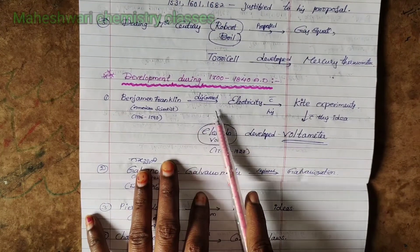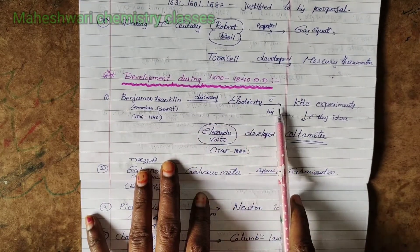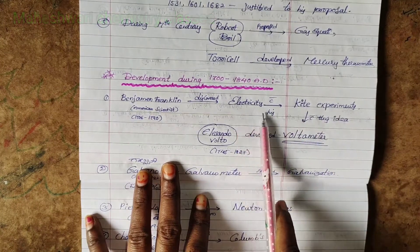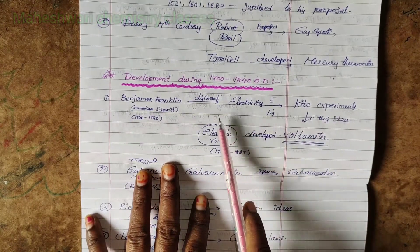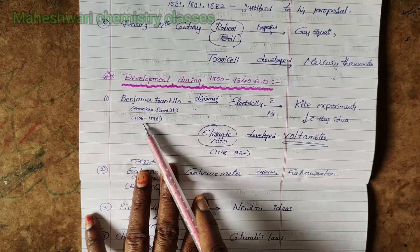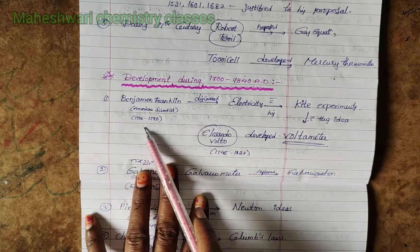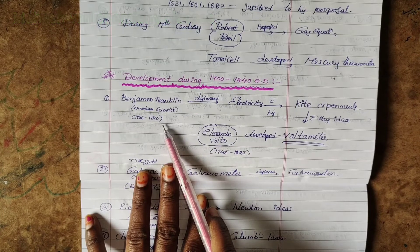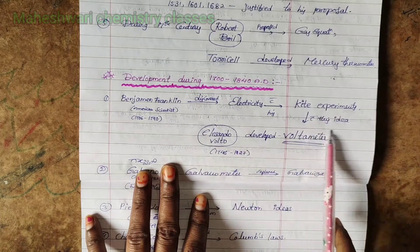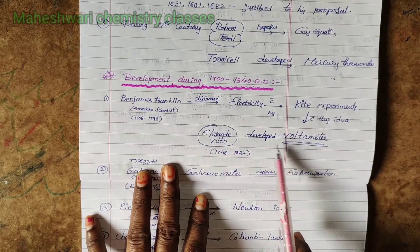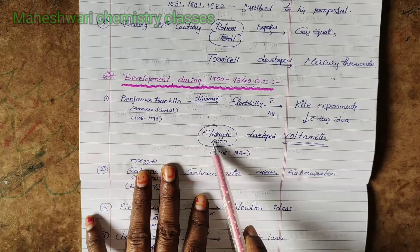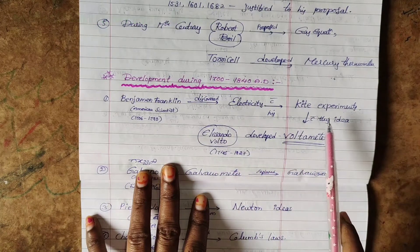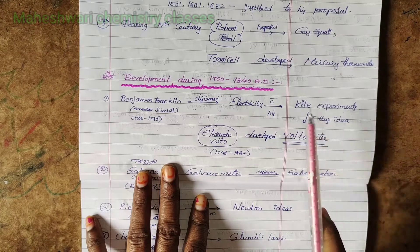Benjamin Franklin discovered electricity with the kite experiment. Franklin was an American scientist who lived 1706–1790. The kite experiment demonstrated the nature of electricity.